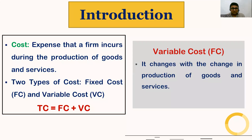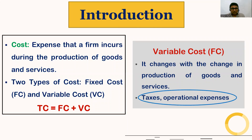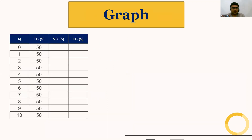On the other hand, variable cost changes with the change in production of goods and services. For example, taxes or operational expenses. Higher the production, higher the variable cost; lower the production, lower the variable cost.